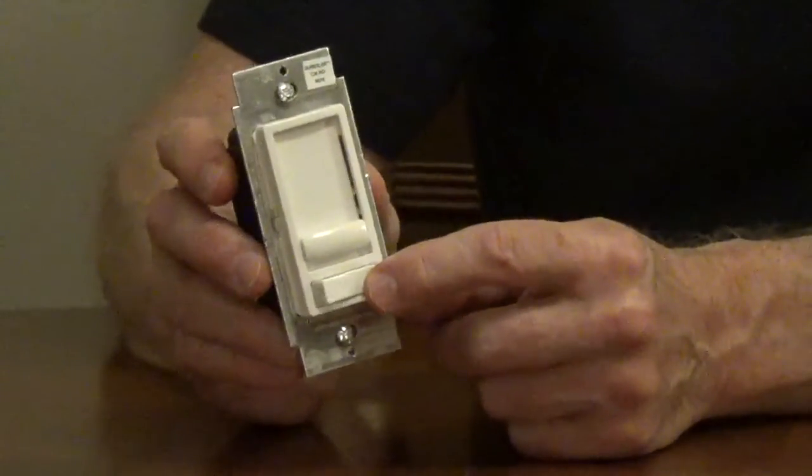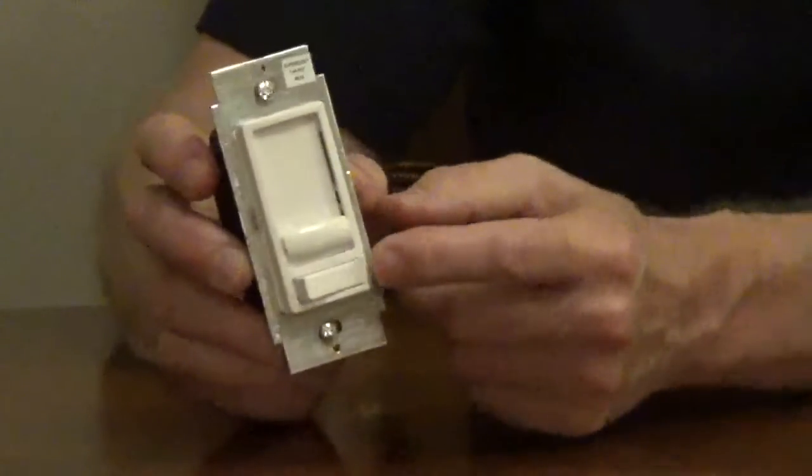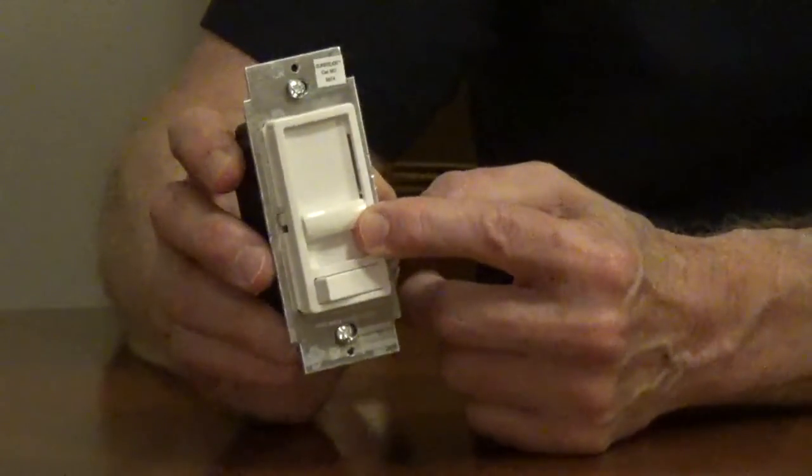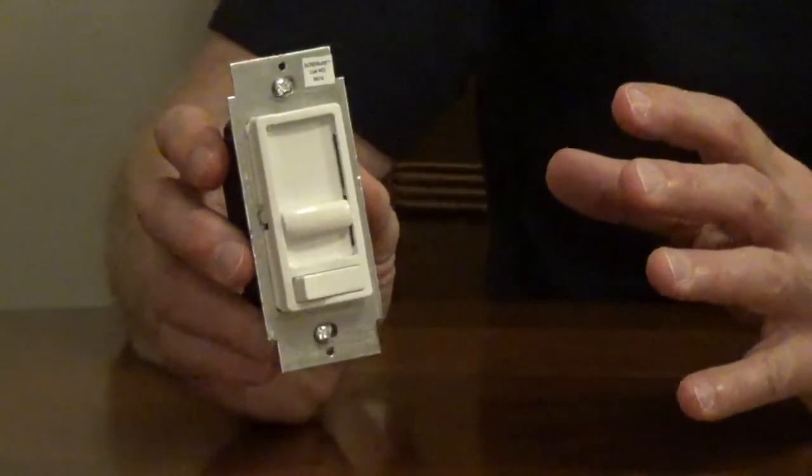Now you're going to turn on the dimmer and move that top switch to CFL. Slowly move up the slide until there's no flickering, and this would be the minimum level for the bulb that you have in.